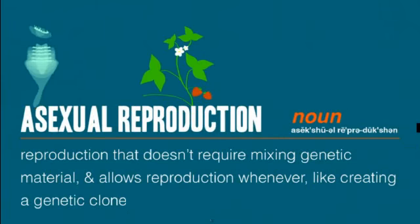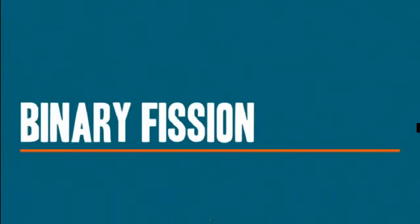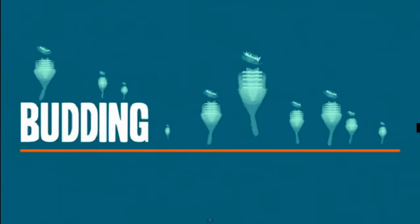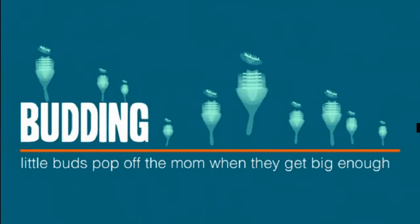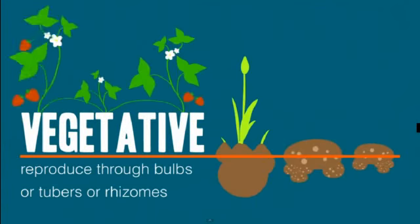Asexual reproduction doesn't rely on mixing anybody's genetic material — it lets you make a genetic clone of yourself whenever you feel like it. This can happen through binary fission, which bacteria, protists, and unicellular fungi do, where an organism splits in half. There's also budding, which is what hydras do, and organisms can also reproduce vegetatively through bulbs, tubers, or rhizomes.